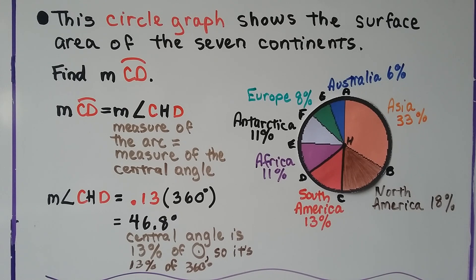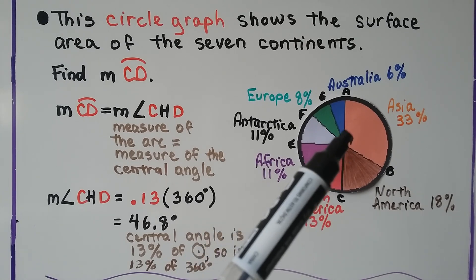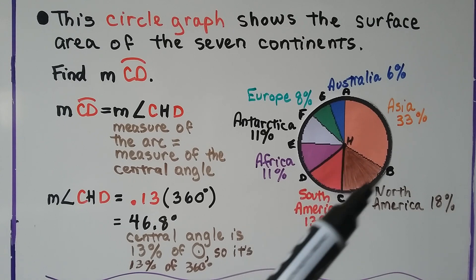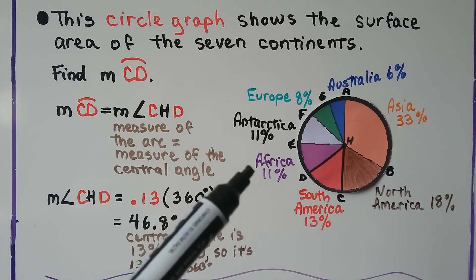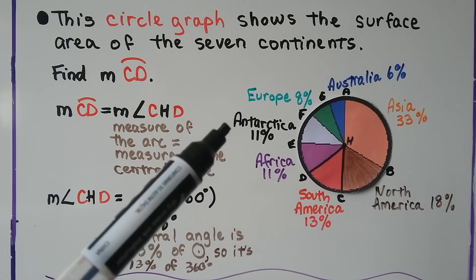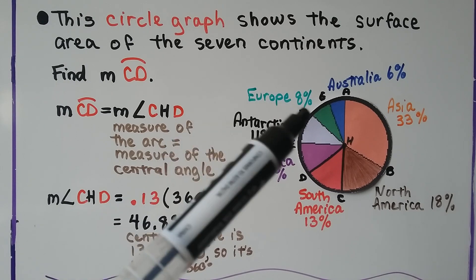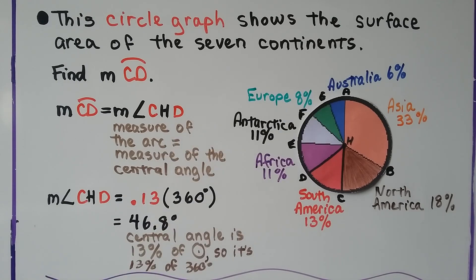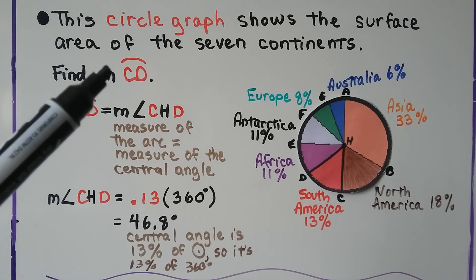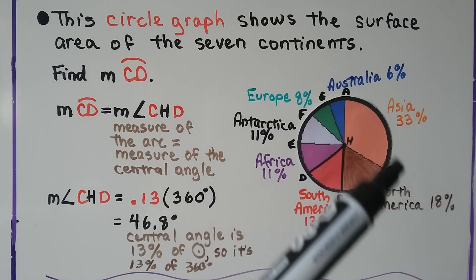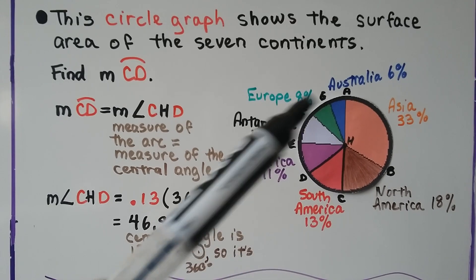Now take a look at this circle graph. It shows the surface area of the seven continents. And it's color coordinated. We can see Asia is 33 percent, North America is 18 percent, South America is 13 percent, Africa 11 percent, Antarctica is 11 percent, Europe is 8 percent, and Australia is 6 percent. We need to find the measure of arc CD. And you can see the points A, B, C, D, E, F, G going around.